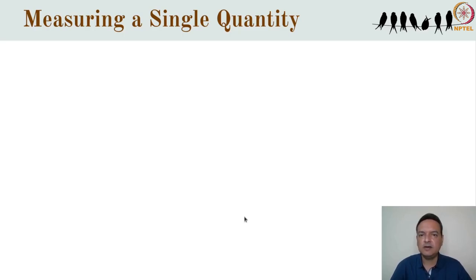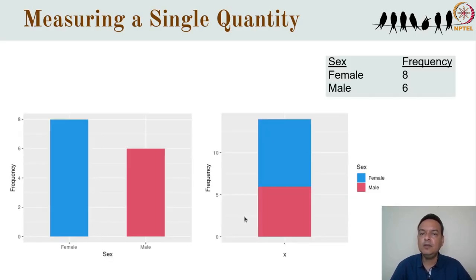For categorical data, we often want to estimate the proportion of the population that falls in one category or another, which can easily be calculated from the frequency table. Remember that this is only the sample proportion, and we hope — but don't know for sure — that it's somewhere near the population proportion. We can visualize the data using a bar graph, either side by side or stacked. The visual comparison between the two numbers is easier when the bars are side by side. When there are multiple levels, the visualizations can be easier to understand than the frequency tables themselves.